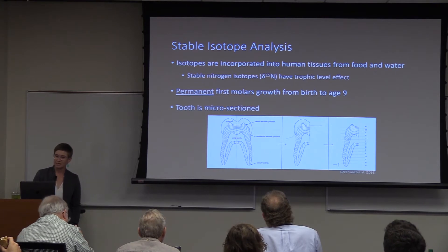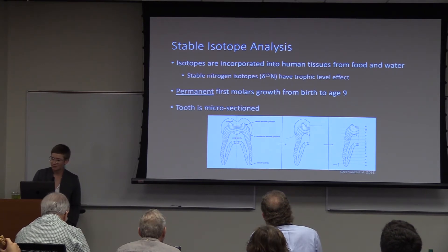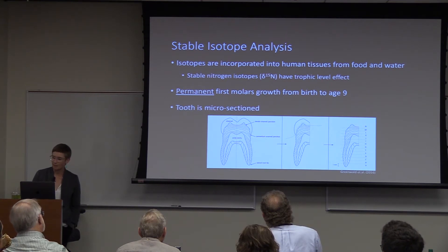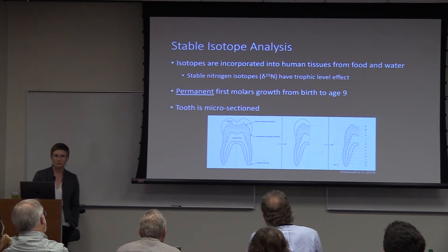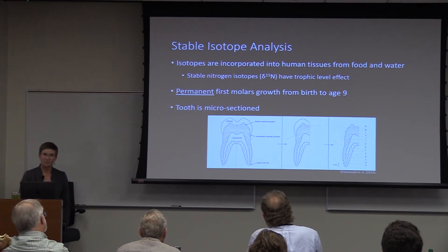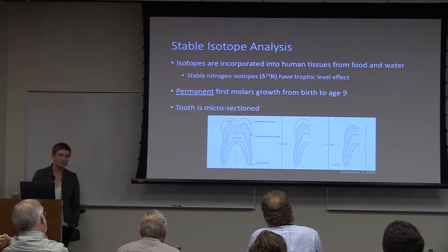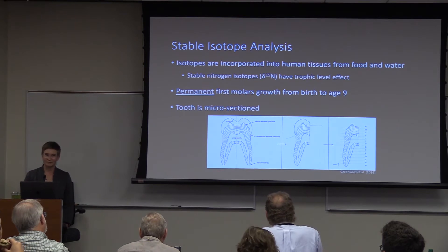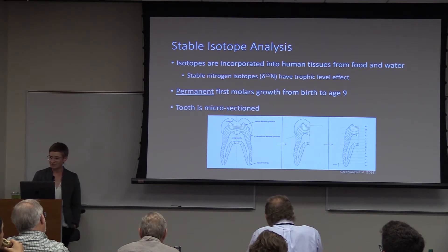My main focus today is going to be stable nitrogen isotopes because they display a trophic level effect where the collagen of a consumer is enriched two to four per mil over consumed food. This tracks trophic levels in the food web. This holds true for breast milk because infants are consuming human protein — essentially cannibalizing human tissue — so they're elevated one trophic level above adults in the population.